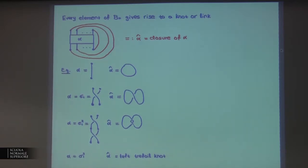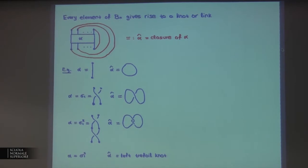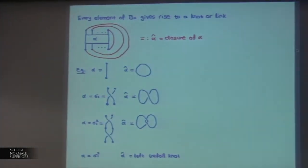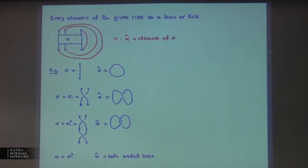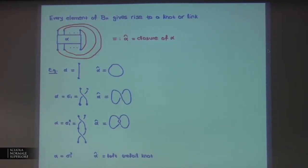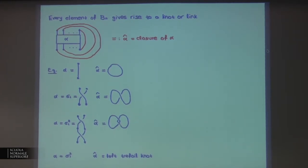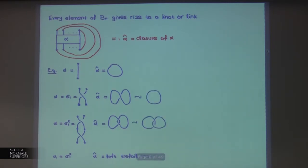The major question in knot theory is when two knots or links are equivalent — mathematically, when there is an isotopy between the two objects. Informally, imagine everything is in a fluid and you can gently move strands to go from one knot to the other without breaking things apart. For example, the knot obtained from sigma_1 gives the unknot, while sigma_1 squared is two circles linked together in a way we cannot break apart.